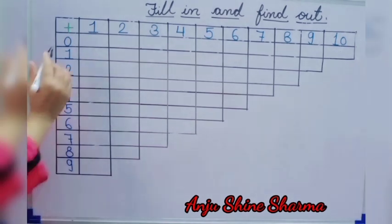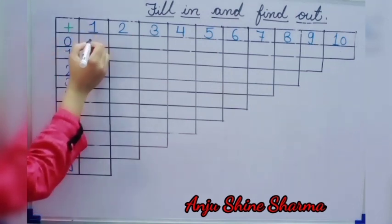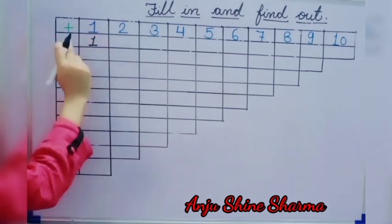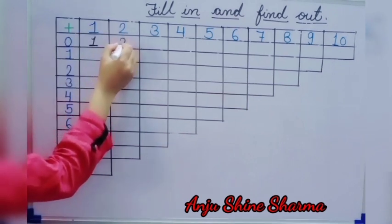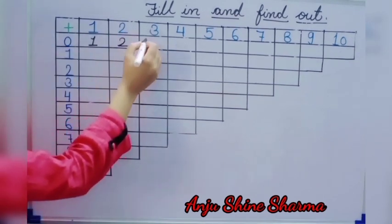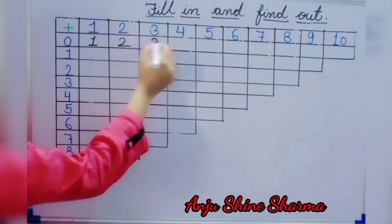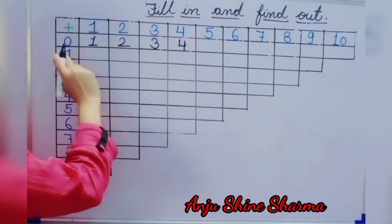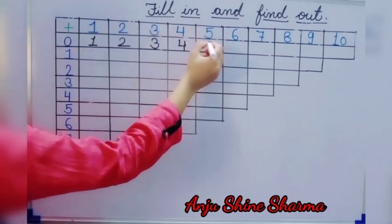First we add 0 and 1. So 0 plus 1 is equal to 1. Then 0 plus 2 is 2. Next is 0 plus 3 is 3. 0 plus 4 is 4. Then 0 plus 5 is 5.